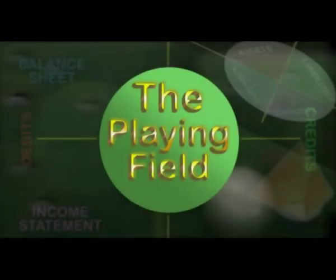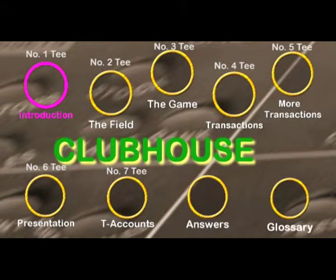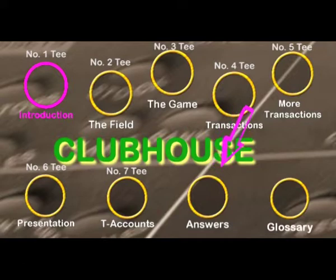Here we are on the playing field and this is the clubhouse, our main menu. From this point we can access any of the seven tees that make up the game. There are also two additional reference items on the menu: one contains answers to selected questions and the second covers the glossary.